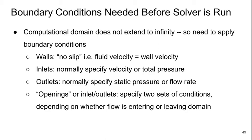At outlets, we normally specify the static pressure or perhaps the flow rate that we want. And we can also have openings or inlet-outlet boundaries where we specify two sets of conditions for either inlet or outlet flow, depending on whether the flow ends up entering or leaving the domain there. This is a bit more flexible when we have boundaries where it's not clear which will be happening.